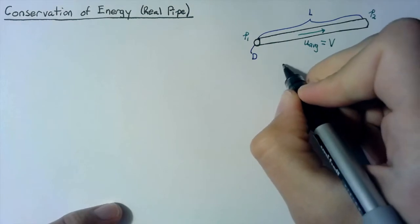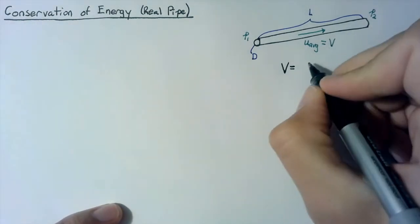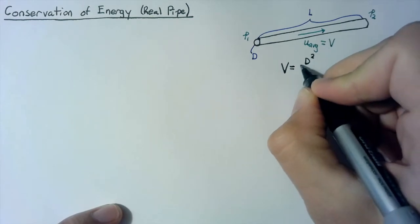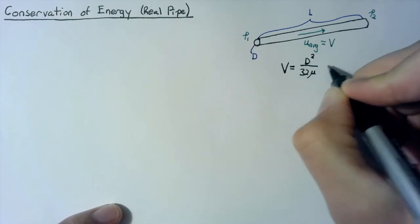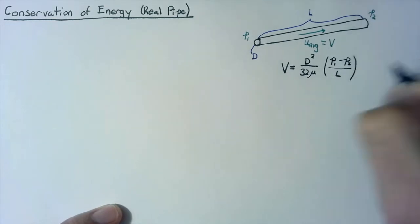Now if our flow is fully developed, we can say that this V is equal to D squared over 32 mu multiplied by P1 minus P2 divided by L.